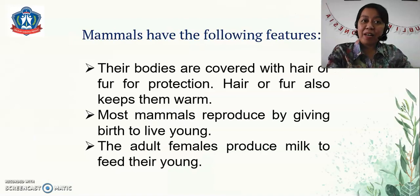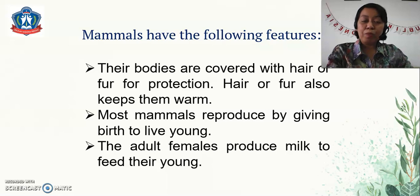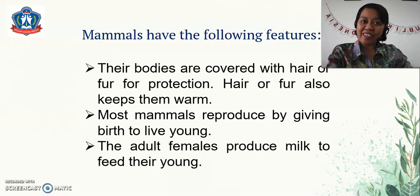Mammals have the following features. Their bodies are covered with hair or fur for protection. Hair or fur also keeps them warm. Most mammals are produced by giving birth to live young, and the adult females produce milk to feed their young.